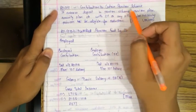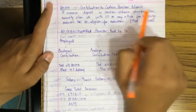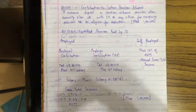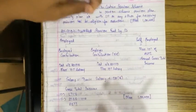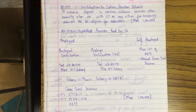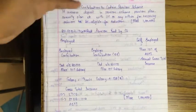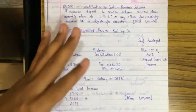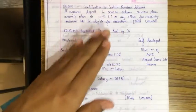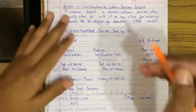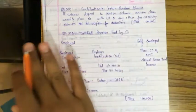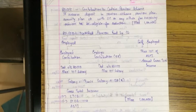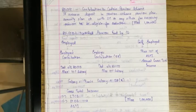80CCC - contribution to certain pension scheme. If an assessee deposits in a pension scheme, pension plan, annuity plan, etc. with LIC or any other for receiving pension, he is eligible for deduction. I think it is quite self-explanatory. The deduction under this section is maximum up to Rs. 1 lakh. Maximum up to Rs. 1 lakh means if he has invested Rs. 90,000, then he will get only Rs. 90,000, not Rs. 1 lakh. We will not say because it is maximum Rs. 1 lakh, so you will directly put Rs. 1 lakh and deduct it. It is not like that. Don't do that mistake. It is the amount or the maximum deduction, whichever is low. Same in the case of 80C also. I hope this much is clear. Please write that 80C.